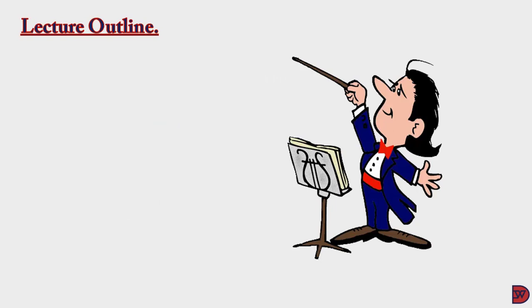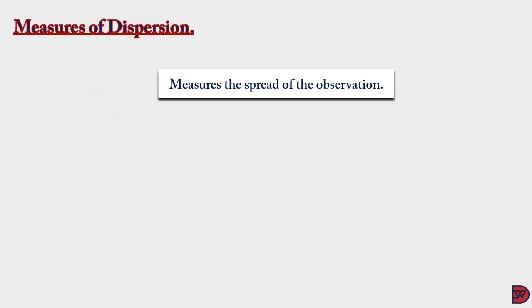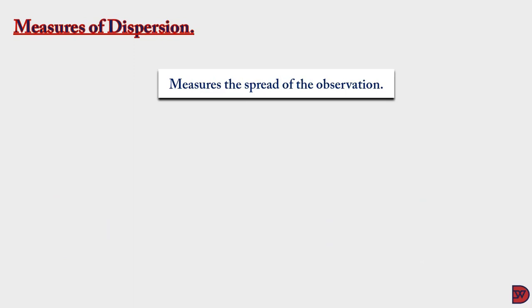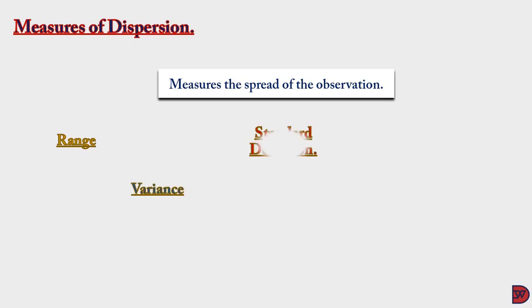Measures of dispersion — let's look at a lecture outline. We'll start with the definition, move on to discuss range, variance, standard deviation, and then coefficient of variation. Measures of dispersion looks at how the values are related to each other, whether they are clustered or widely apart. We looked at measures of averages in a previous episode, where we talked about mean, median, and mode. We have four measures of dispersion: the range, the variance, the standard deviation, and the coefficient of variation.